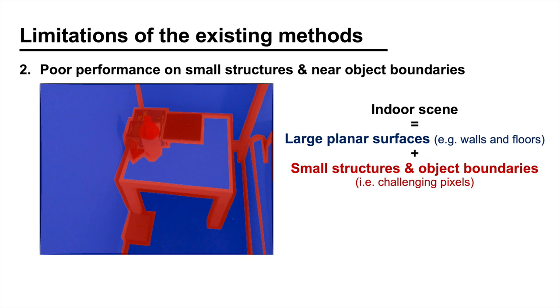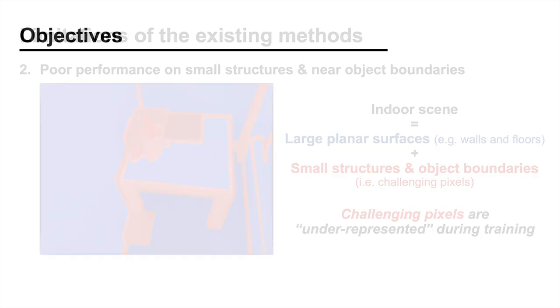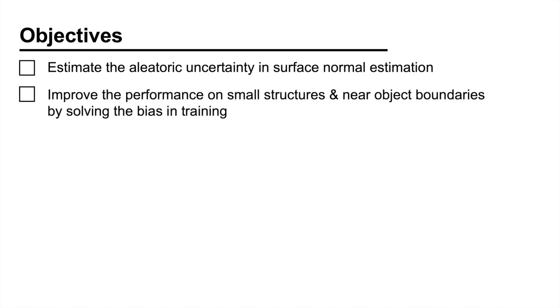An indoor scene mainly consists of large planar surfaces like walls and floors, and small structures plus object boundaries with complex geometry. Therefore, if we apply the training loss on all pixels, the challenging pixels are underrepresented during training. The aim of this project was to solve these limitations.